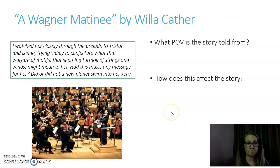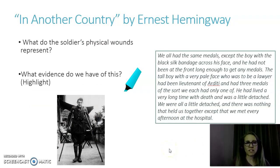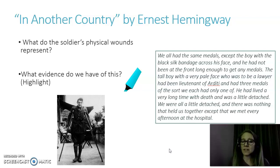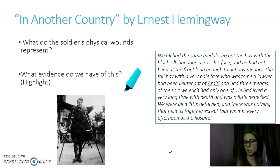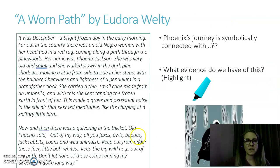In "In Another Country" by Ernest Hemingway, consider: what do the soldiers' physical wounds represent? Your reading journal is useful here. From the excerpt: "We all had the same medals except the boy with the black silk bandage across his face... the tall boy with a very pale face... had three medals... He lived a very long time with death and was a little detached. We were all a little detached and there was nothing that held us together except that we met every afternoon at the hospital." What do those physical wounds represent?